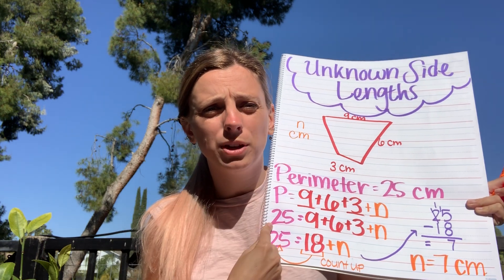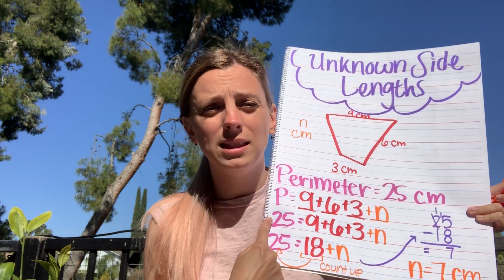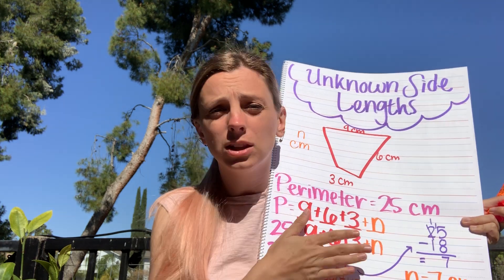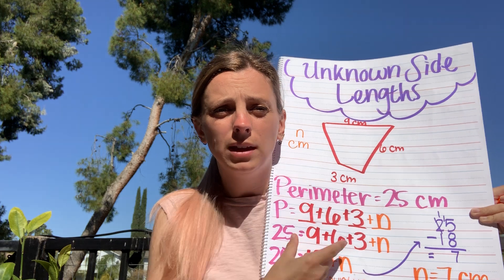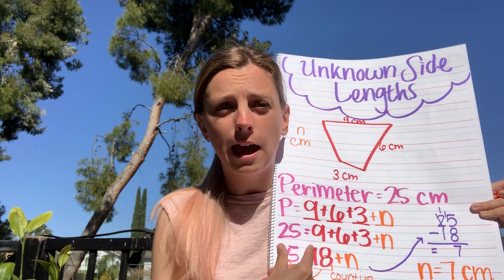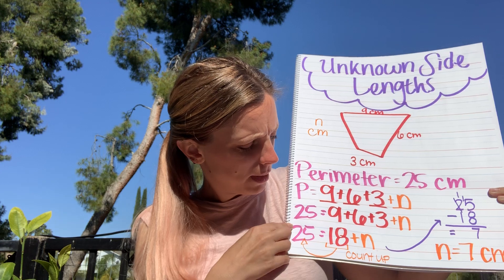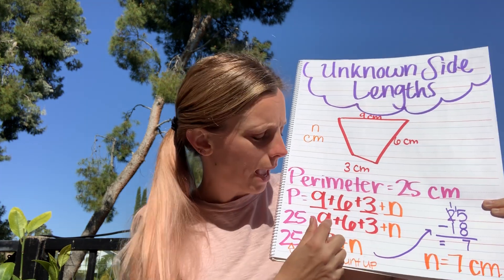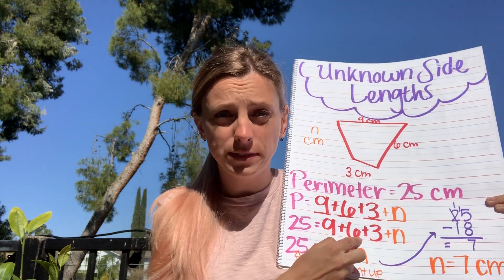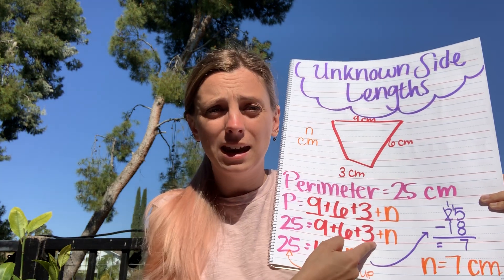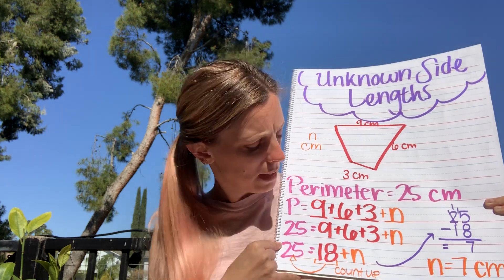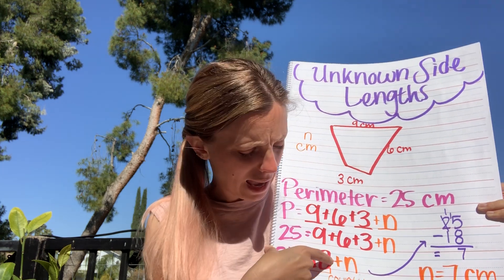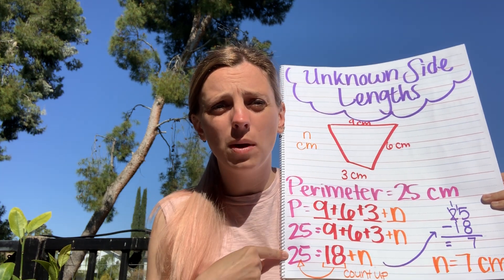Remember, it doesn't matter what side the equal sign is on — it can be on this side or at the end where we usually see it. Either way it doesn't change our problem. So I'm going to combine the parts that I know. Nine plus six gives me 15, and adding three gives me 18. So now I know that the 18 from the sides I do know, plus that missing side, will get me up to 25.